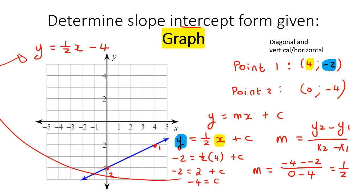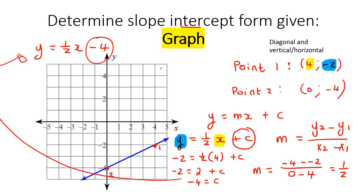Some of you might have thought: for the c value, I know that's the y-intercept, so if I can see on the graph that the y-intercept is minus 4, can I just fill that in directly? And yes, you can do that. I only realized afterwards that we can actually see the y-intercept — the part where it cuts the y-axis. So you could have just written that down, and for the next questions I'll actually do it that way.